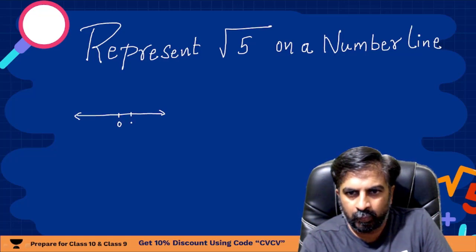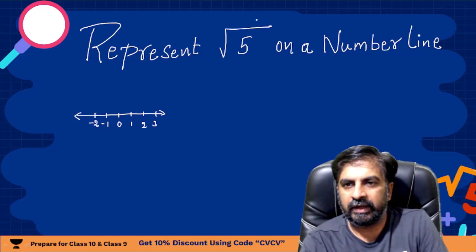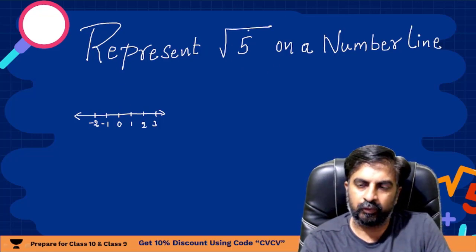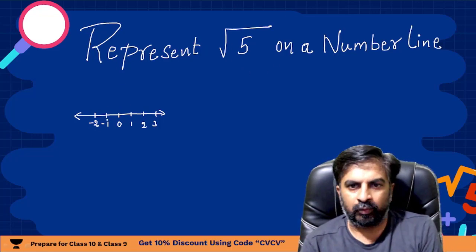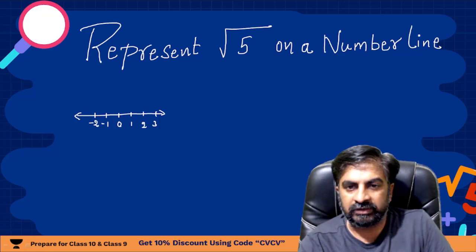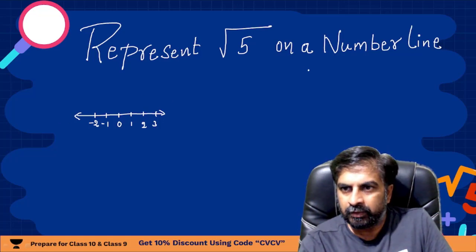Zero, one, two, three, minus one on this side, minus two. So directly if any term with root, if they are telling you to represent this on a number line, directly you cannot represent root 5 on this.